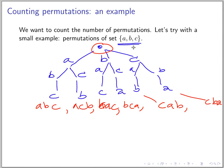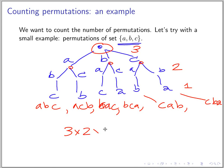In the first step we have three choices, in the second step we have two choices, and in the last step only one. So the number of permutations is three times two times one. We have a notation for this: we write it as three factorial.